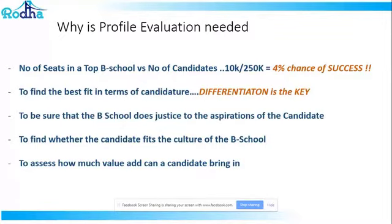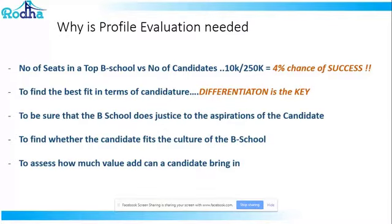If your profile is not fitting into the whole scheme of things, you are basically not there in the top business school. You also need to look at it this way — if there is a 4% chance of success, we are also seeing a 96% chance of rejection. In short, since demand and supply is skewed — the supply of worthy candidates trying to get in is very low while demand is extremely high — your percentage chance is reduced.